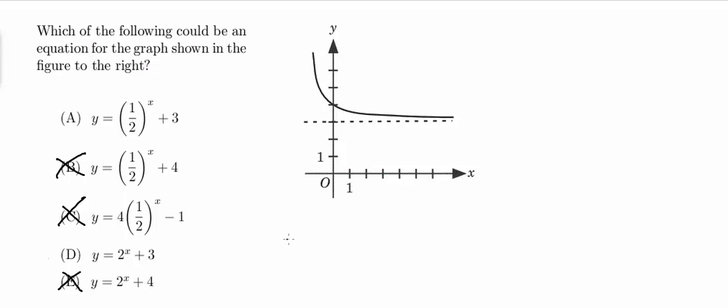So moving on from there, if we compare choices A and choice D, choice A we notice that it's 1 half to the x power. And if you remember, any time you have a number less than 1 to the x power, it's going to look something like this graph here does.